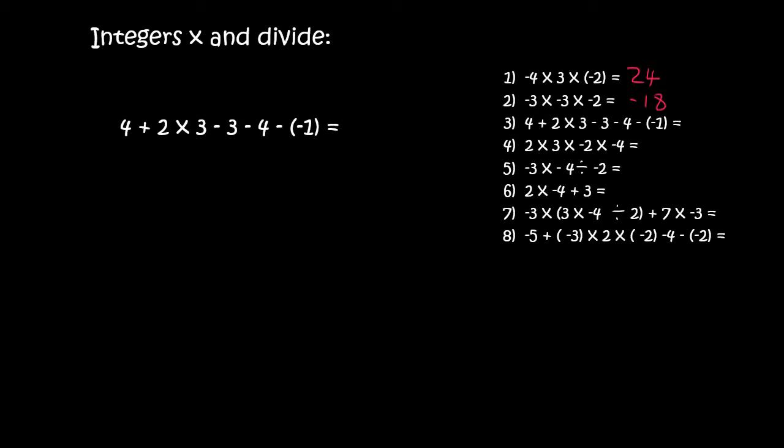Here we've got a combination of plussing and minusing and multiplication. So we find the multiplication first. There it is, it's only over there. And so we write everything else out. That's 4 plus, and then 2 times 3 is obviously just 6, minus 3, minus 4.